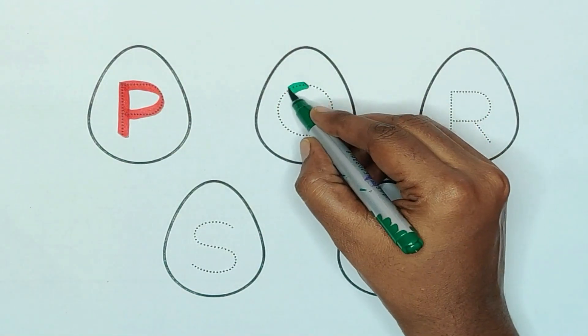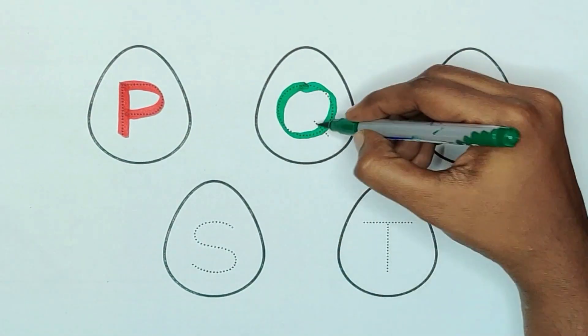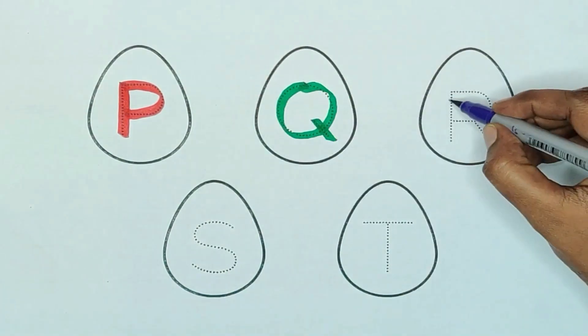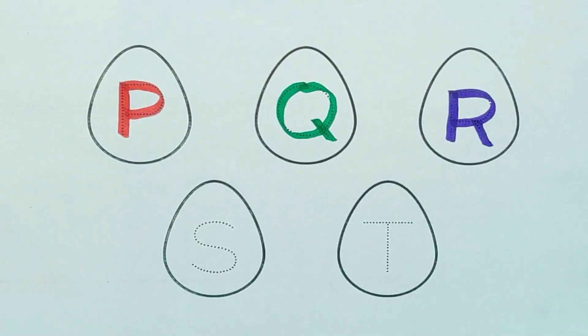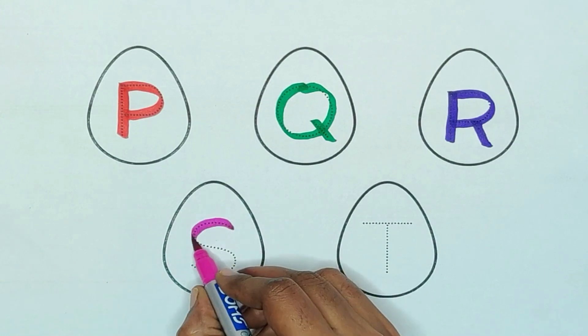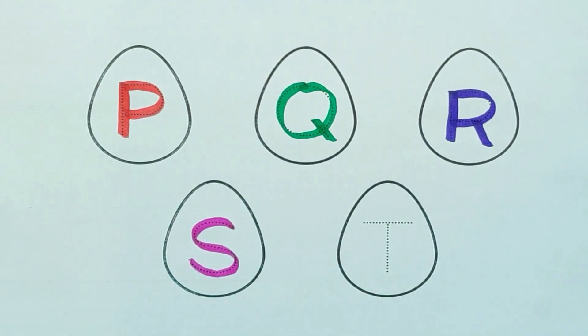Green color Q, Q for queen. Violet color R, R for rose. Pink color S, S for sunflower.